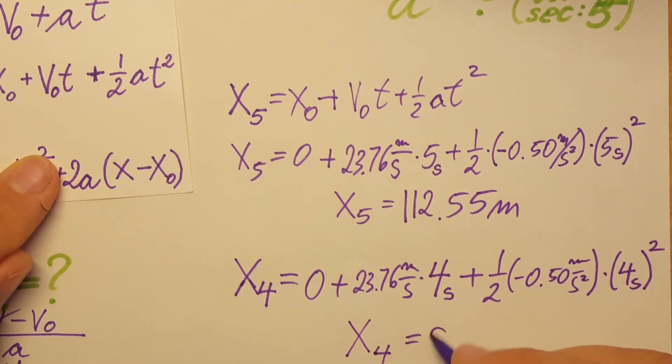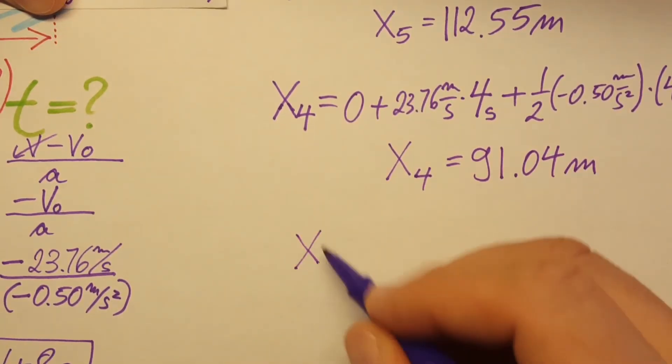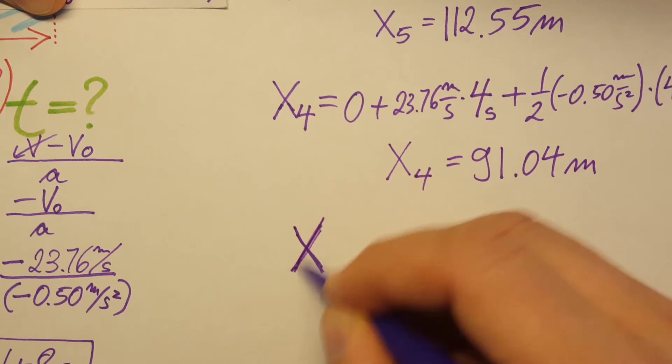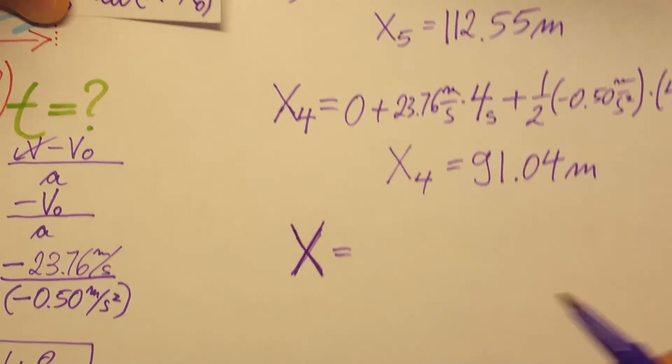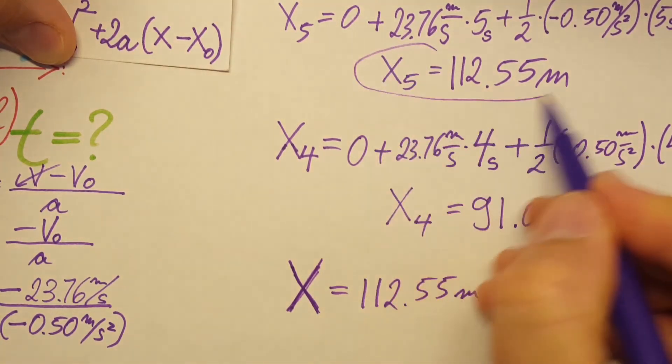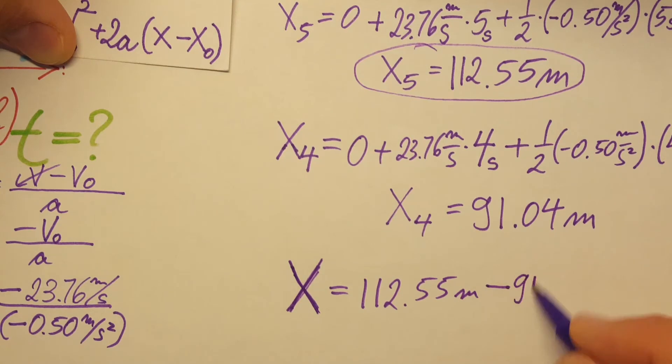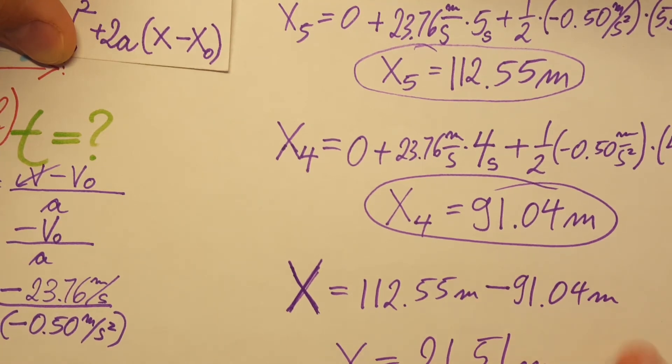Our distance is 91.04 meters. Now we can finally get our answer. The distance during the fifth second is simply 112.55 meters minus 91.04 meters. With the calculator, our final value is 21.51 meters. With two sig figs, that's 22 meters.